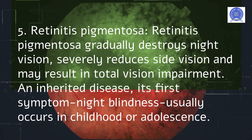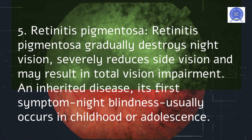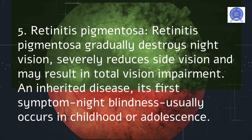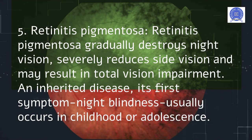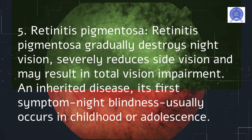Retinitis Pigmentosa gradually destroys night vision, severely reduces side vision, and may result in total vision impairment. An inherited disease, its first symptom of night blindness usually occurs in childhood or adolescence.